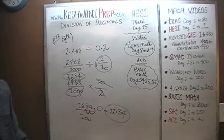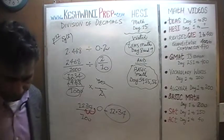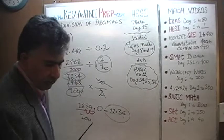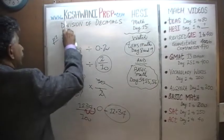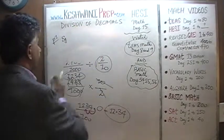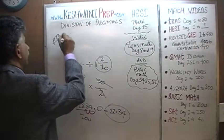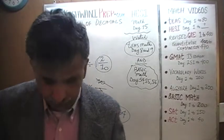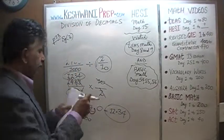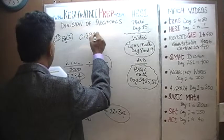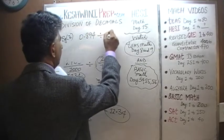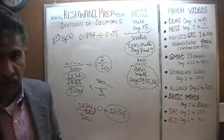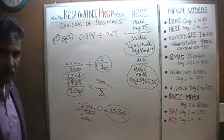Let's do one more — number 3. We are no longer on page 12; now we are on page 13. Example number 3 is asking us to divide 0.894 by 0.04. It's the same exact logic, same exact process — nothing has changed.